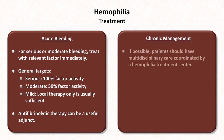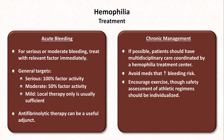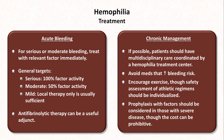For chronic management, if possible, patients should have multidisciplinary care coordinated by a hemophilia treatment center, though the availability of such care will depend on where the patient lives. Avoid medications that increase bleeding risk — most obviously anticoagulants and antiplatelet medications, including aspirin, but also things like NSAIDs. This doesn't mean these can never be used, but they should only be used very cautiously with careful consideration of the risk-benefit ratio. Exercise should be encouraged for cardiovascular benefits, but a safety assessment of athletic regimens should be individualized. Prophylaxis with the relevant clotting factors should be considered in those with severe disease, though the cost can be prohibitive.